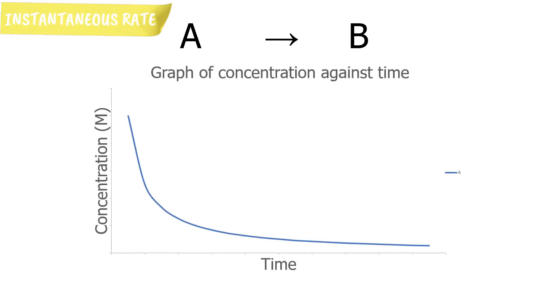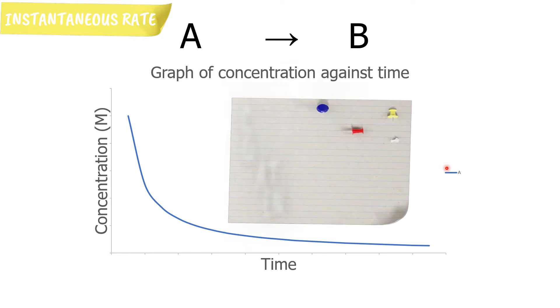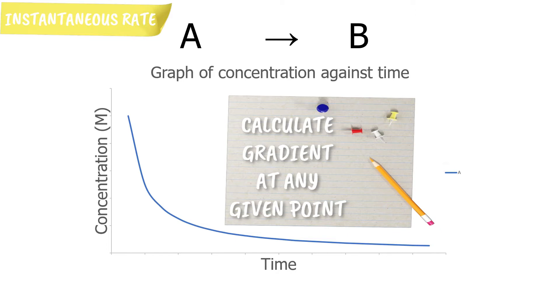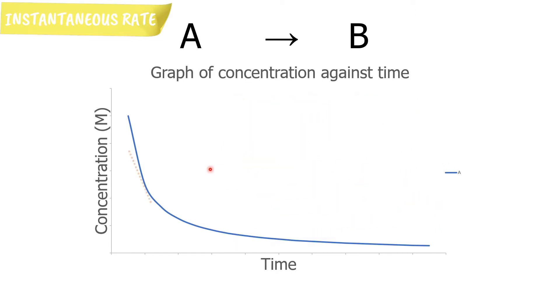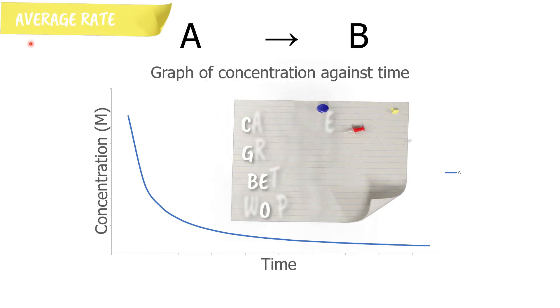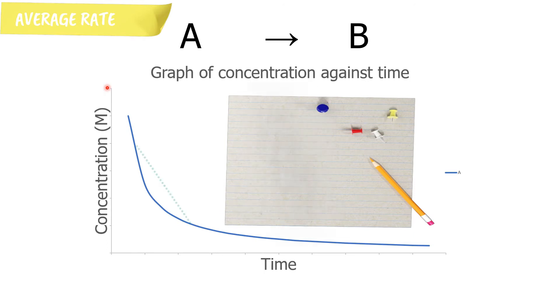Let's have a look at how we can calculate the rate of reaction. For the sake of simplicity, we are going to look at the change in concentration of A only. There are two methods. The first method is done by calculating the gradient of the curve at any given point. A straight line is drawn on the tangent of the curve, represented by orange dashed lines here. The rate of reaction calculated here is called instantaneous rate of reaction. The second method is done by calculating the gradient of the curve between two points, represented by the green dashed lines.